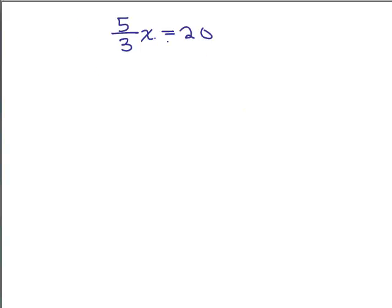Anytime you have a fraction in front of the variable, when you have the variable on one side and constant on the other, you can multiply by the reciprocal to find out what 1x is. So that's one possibility. We'll just multiply both sides by 3 fifths to find out what 1x is.